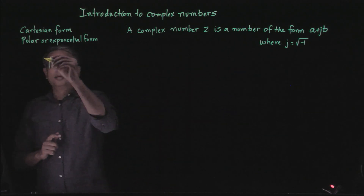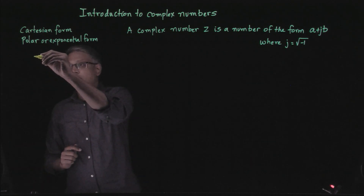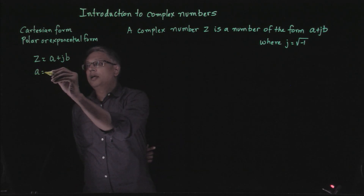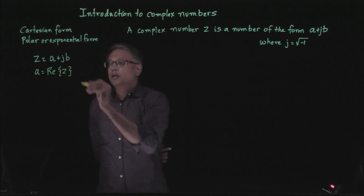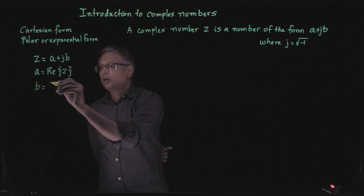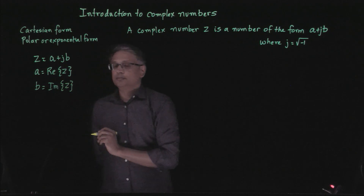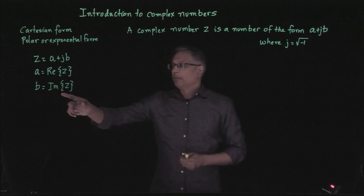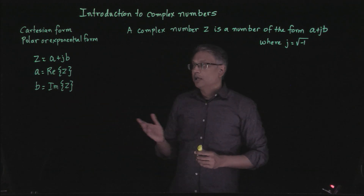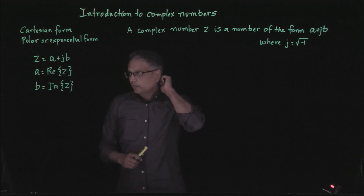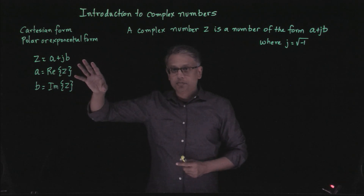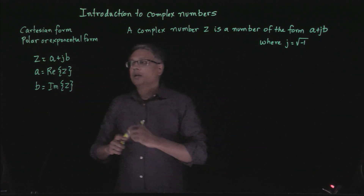If you have a complex number z which is a plus j times b, then we say that a is the real part of z, sometimes written as Re(z), and b is called the imaginary part of z. It's important to keep in mind that the imaginary part of z is not j times b — it is only b. If you are not careful about this, some of your calculations can go wrong.